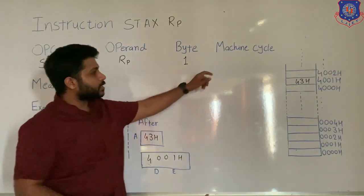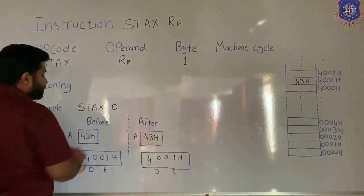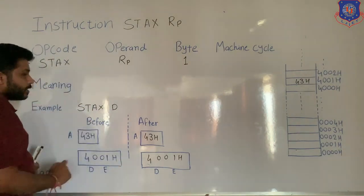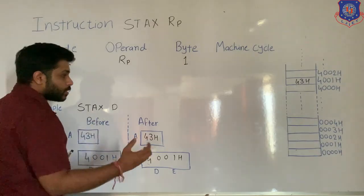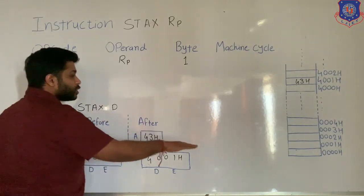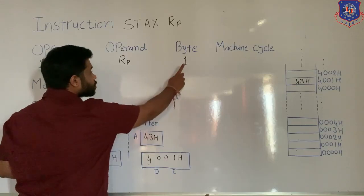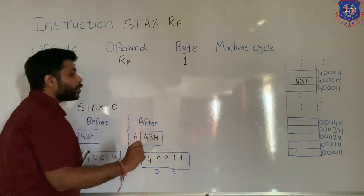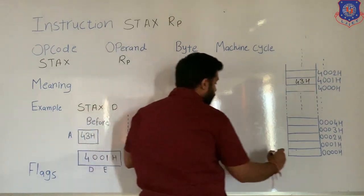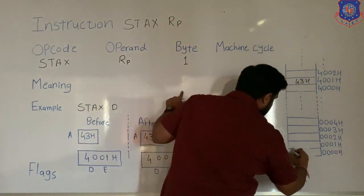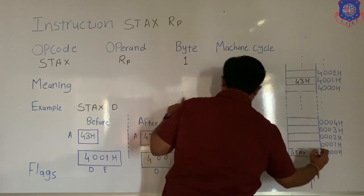Now let's see the machine cycle. This instruction, STAX D, is of 1 byte. So when you give this instruction, it will be stored in memory from the starting location. Because this instruction is of 1 byte, it will occupy only 1 memory location. So in one location, this whole instruction STAX D is stored.